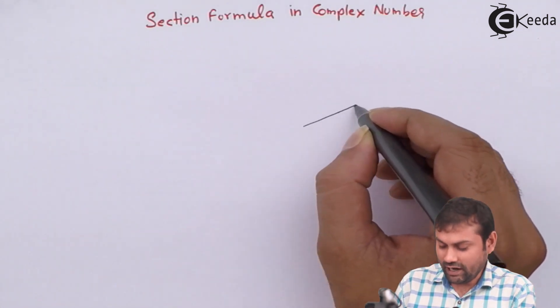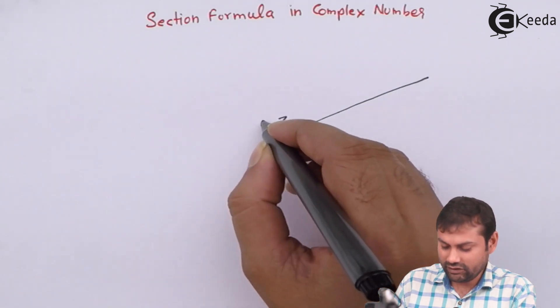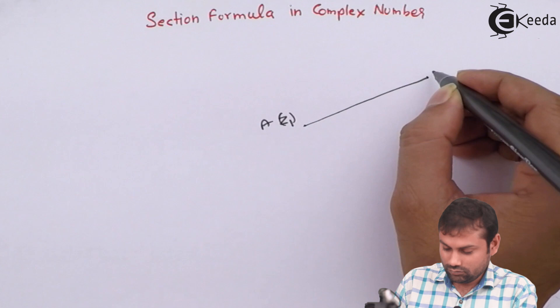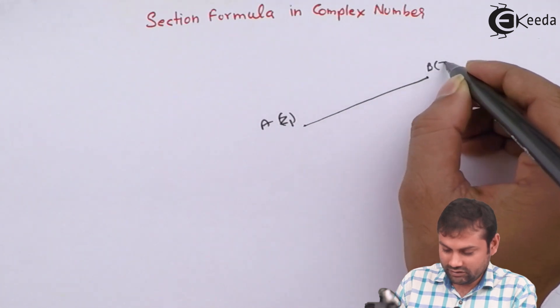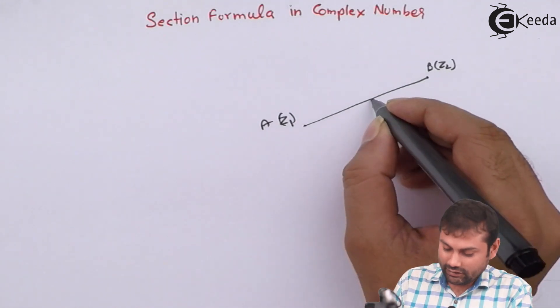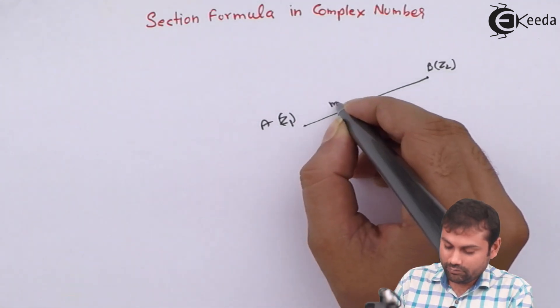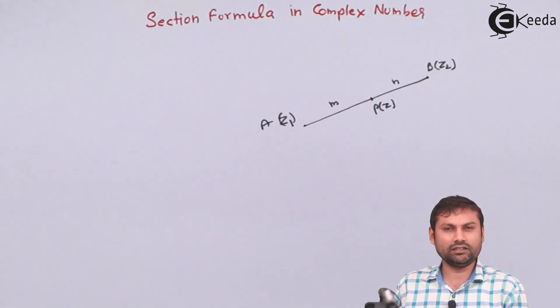Suppose यह line है आपका, okay. यहाँ पॉइंट A(z1) है, यह पॉइंट है B(z2), complex number, okay. और कोई point P है यहाँ पे P(z), वो इसको M is to N ratio में divide करता है।